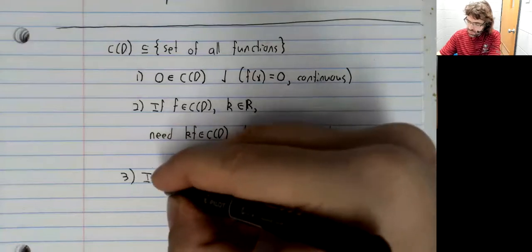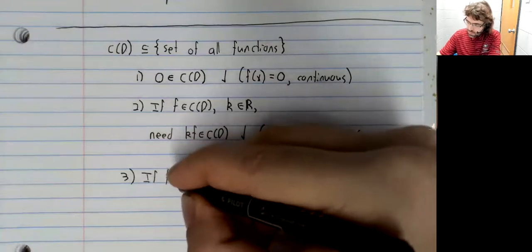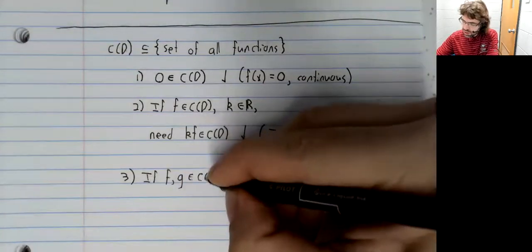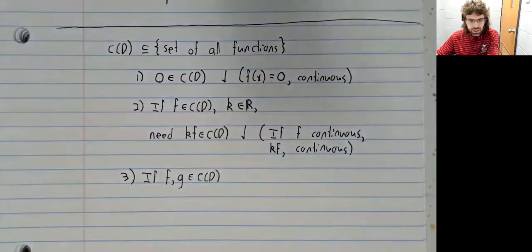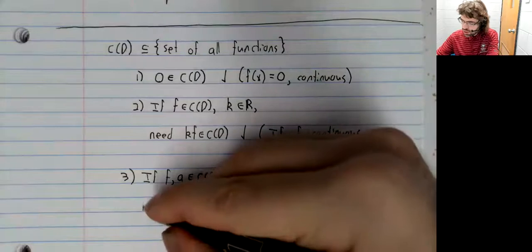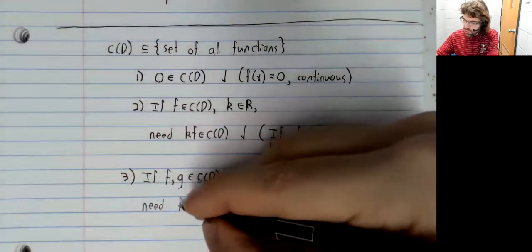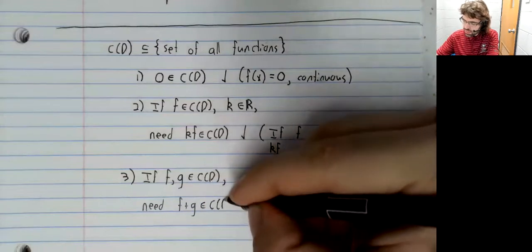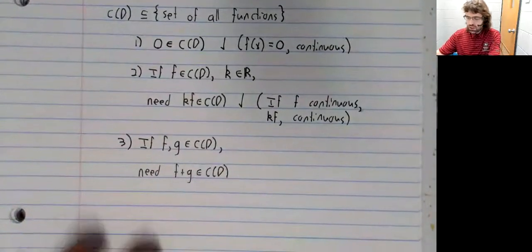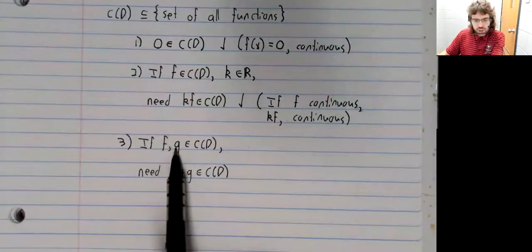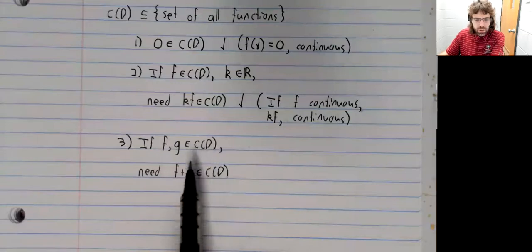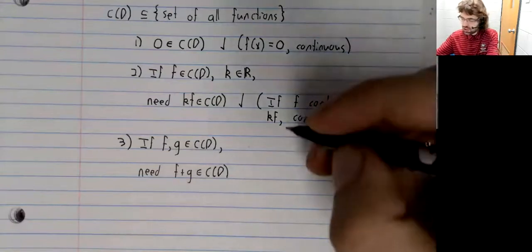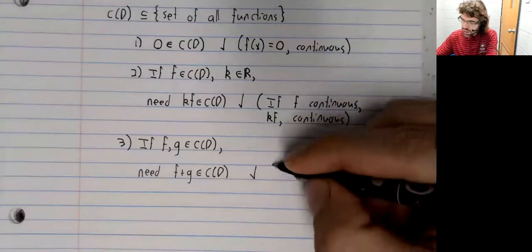Lastly, if we have two functions in this set, we need closure under addition. That is to say, if f and g are continuous, we need f plus g to be continuous. Check again.